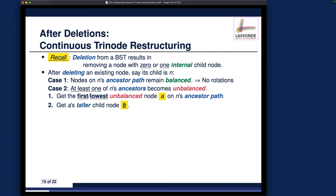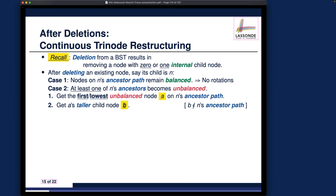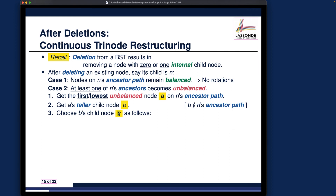When choosing b, rather than simply choosing a's child on the ancestor path, we're going to choose the taller child of a. There is a mathematical property that the taller child of a is not going to be on the ancestor path - you can take that as a fact for this course. So the way you choose b is not simply the child on the ancestor path; rather, you choose the taller child of a.